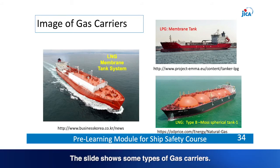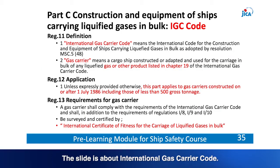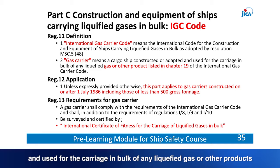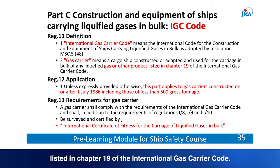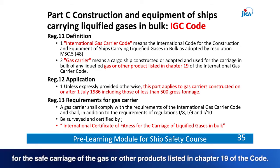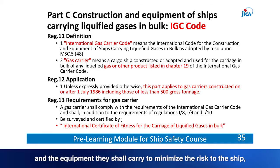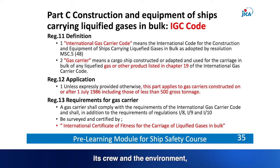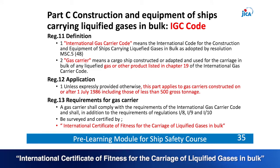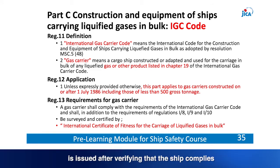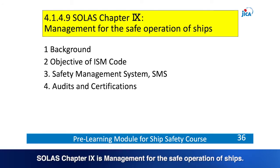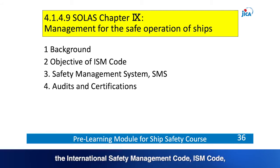The slide shows some types of gas carriers. The International Gas Carrier Code (IGC Code) applies to gas carriers — ships carrying any liquefied gas or products listed in Chapter 19 of the IGC Code. The code prescribes construction standards and equipment to minimise risk to the ship, its crew and the environment. An International Certificate of Fitness for the Carriage of Liquefied Gases in Bulk is issued after initial survey. SOLAS Chapter 9 is Management for the Safe Operation of Ships.